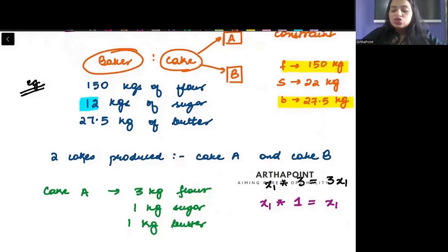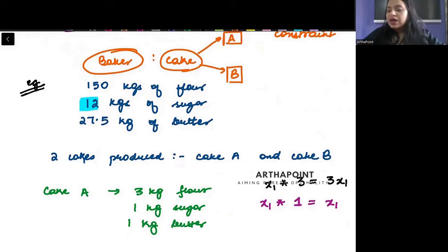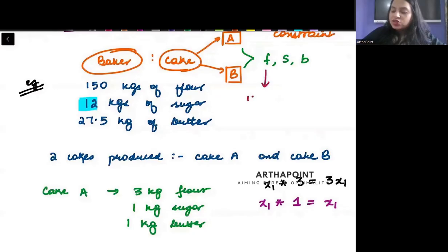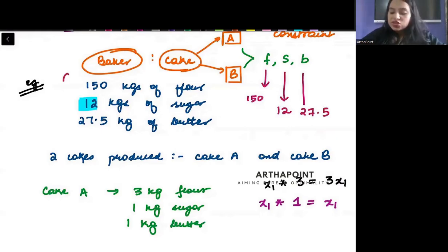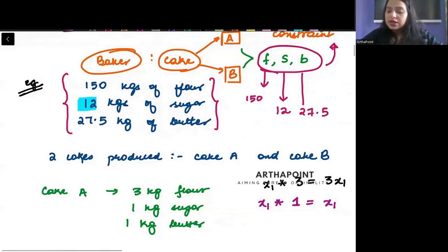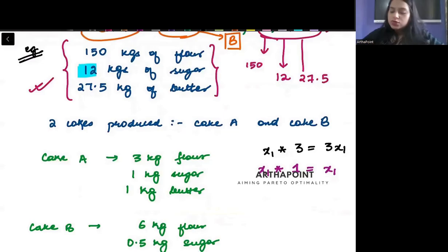He has a constraint on the resources used to make these cakes. Each cake is made from three things: flour, sugar, and butter, and there is a constraint on the quantities of each. There are only 150 kgs of flour, 12 kgs of sugar, and 27.5 kgs of butter. These three resources are used to bake the cake and there is a limit to the resources.